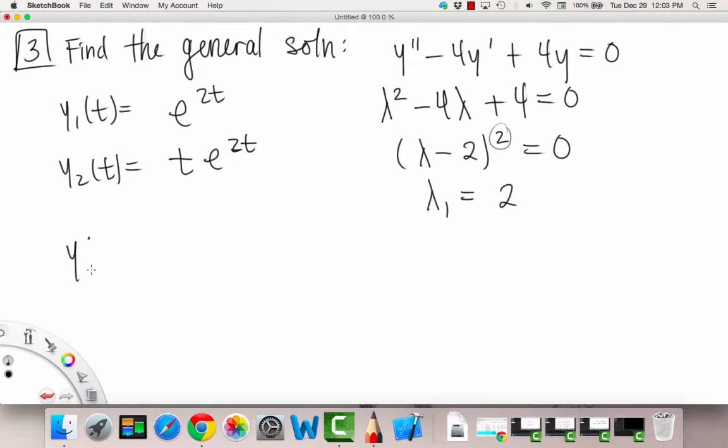Okay, so now we can form our general solution by making a linear combination of those two solutions here. So this is going to be a times e to the 2t plus b times te to the 2t there. Okay? And this, again, was the case of we had one repeated real root.